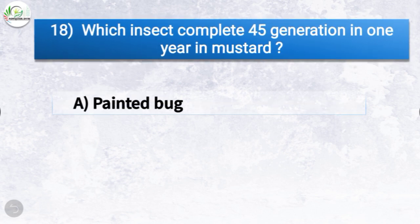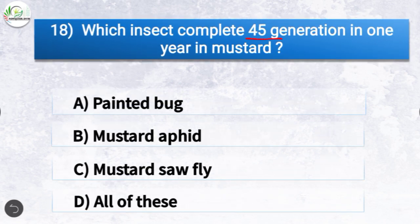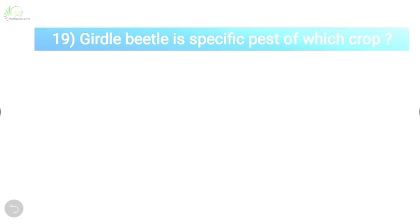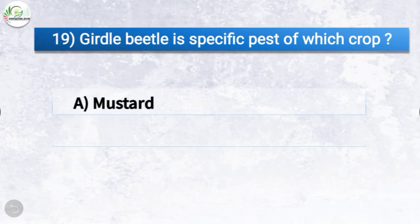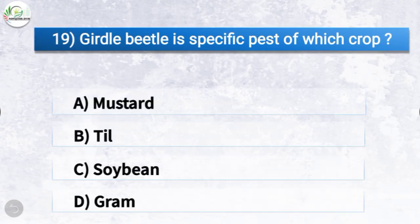Question number eighteen: which insect completes 45 generations in one year in mustard? The options are painted bug, mustard aphid, mustard sawfly, or all of these. The correct answer is option B, mustard aphid. So mustard aphid completes 45 generations in one year in mustard.